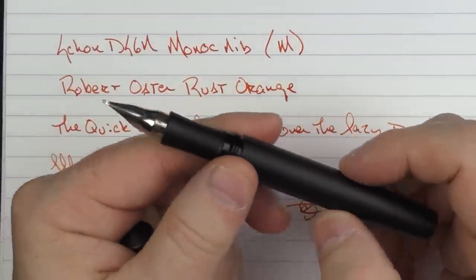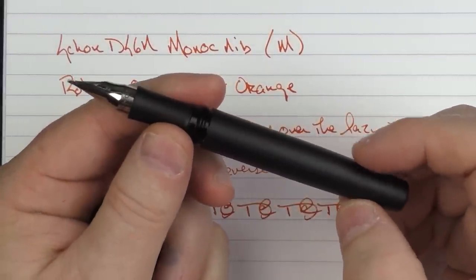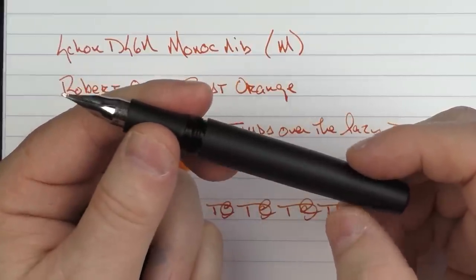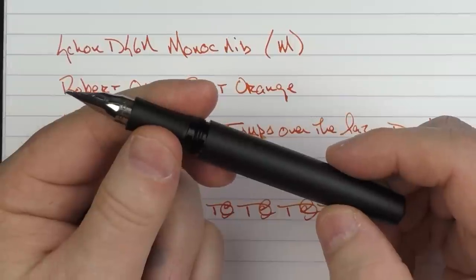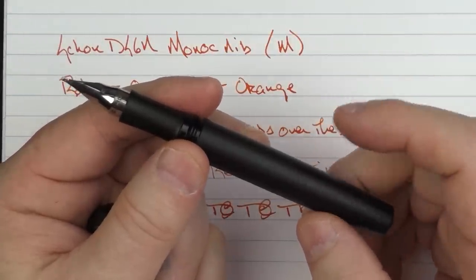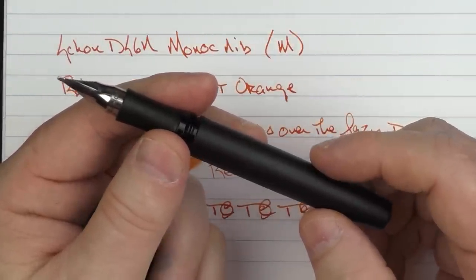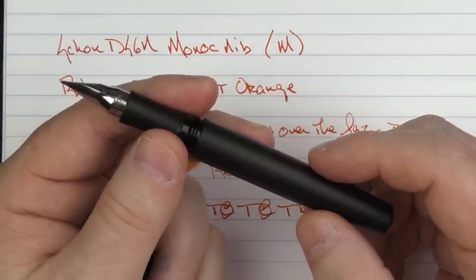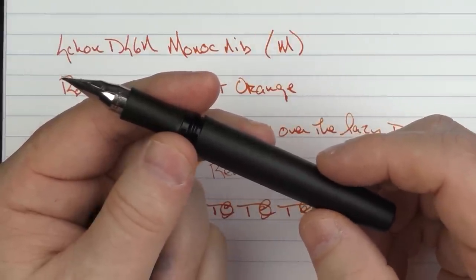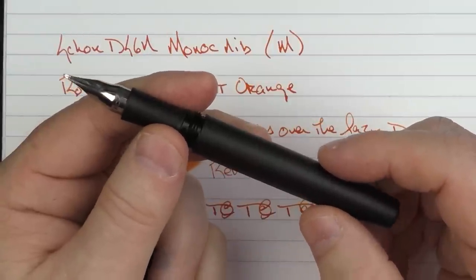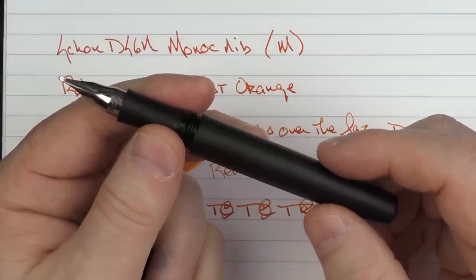So there we have the Schoen Design Monarch. Like I mentioned before, I'm really happy when companies go out of their comfort zone and try something new and different. And I know that a lot of effort over several years went into the design of this. And I'm pleased with the way it turned out and happy for Ian Schoen and his team. And can't wait to see what they come up with next. Until next time, thanks for watching. And I'll talk to you later.